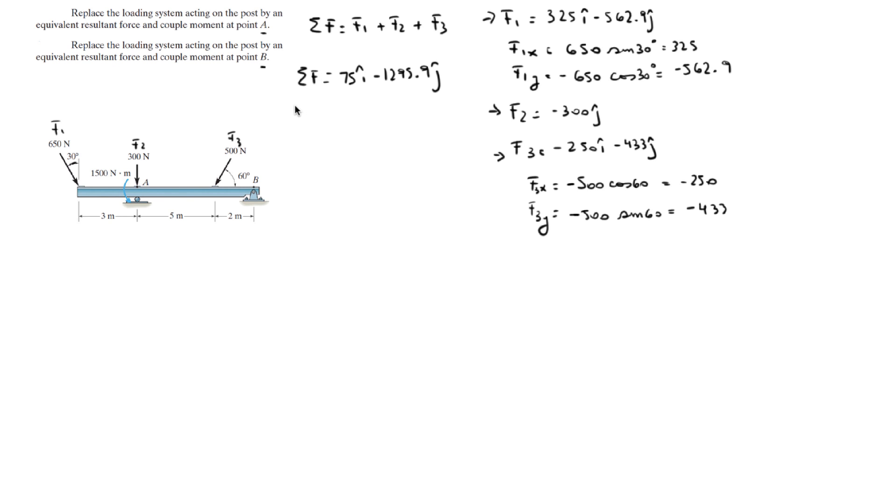Now they want the polar form, so to find the polar form you do 75 squared plus 1295.9 squared, all that square rooted, and you're going to get that the magnitude is 1298 newtons.